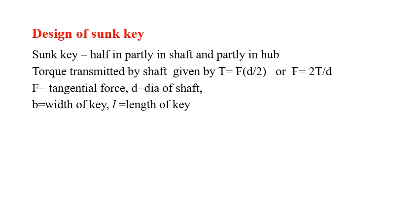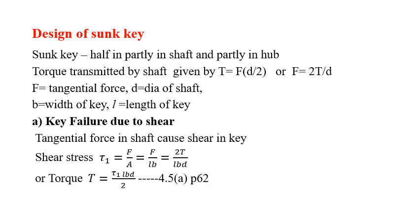Next is the design of sunk key. Sunk key, as I explained, half of the portion will be in the shaft and half portion will be in the hub or pulley. Torque transmitted by the shaft is given by T = F(d/2) or you can rewrite that F = 2T/d, where F is the tangential force, d is the diameter of the shaft, b is the width of the key, and l will be using as length.